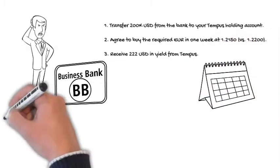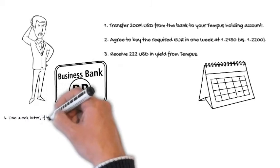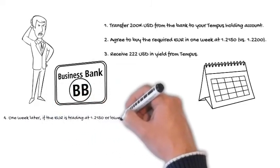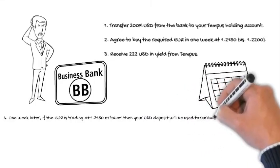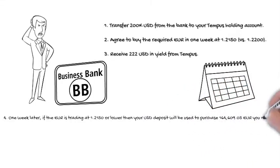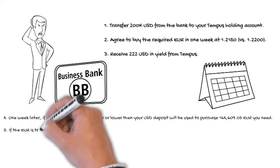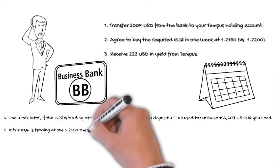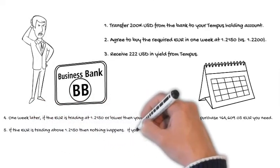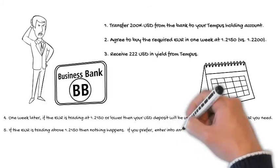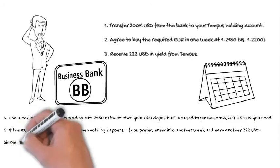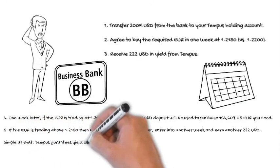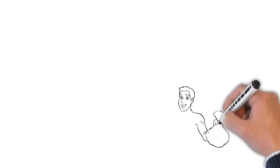One week later, if the euro is trading at $1.2150 or lower, then Tempest will simply take your deposit and purchase the euro that you require — in this case, €164,609 at the rate of $1.2150. But if the euro is trading above $1.2050, nothing happens. You just keep $222 and you can do it again for another week and another week until you need to make the payments.